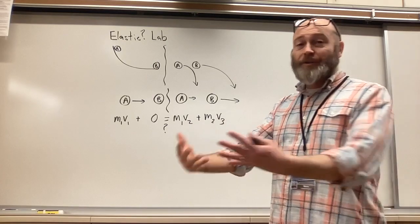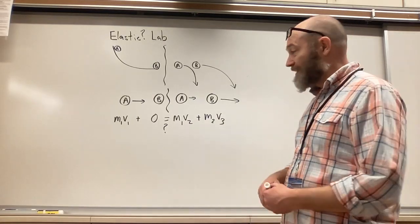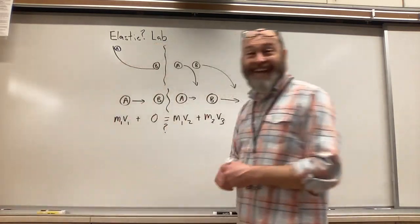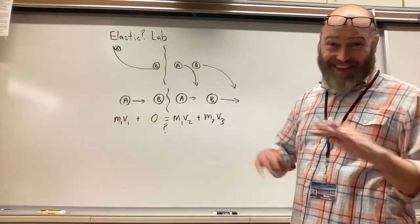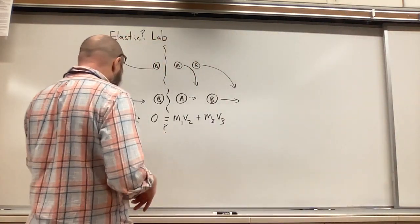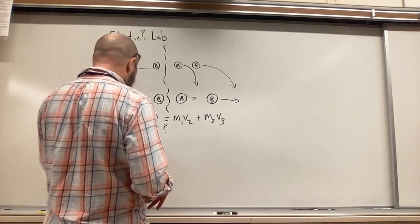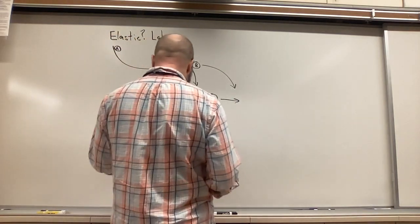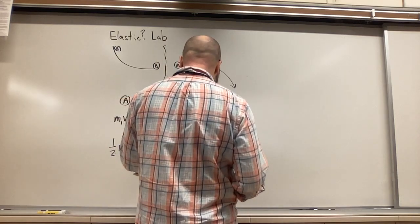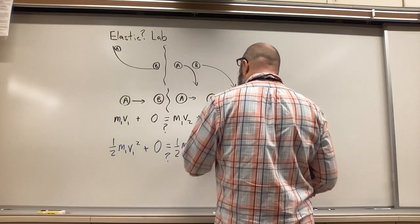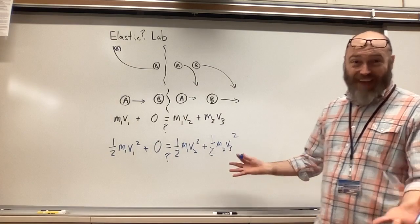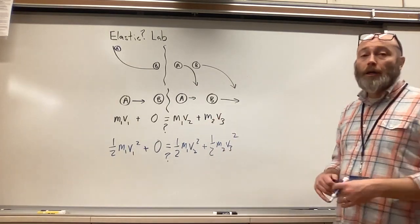To show if it's elastic or inelastic, we need to look at kinetic energy — is the mechanical energy conserved? We write: one-half m1*v1² + 0 on the left side, with a question mark, equals one-half m1*v2² + one-half m2*v3² on the right side. Then you plug your values in and solve.